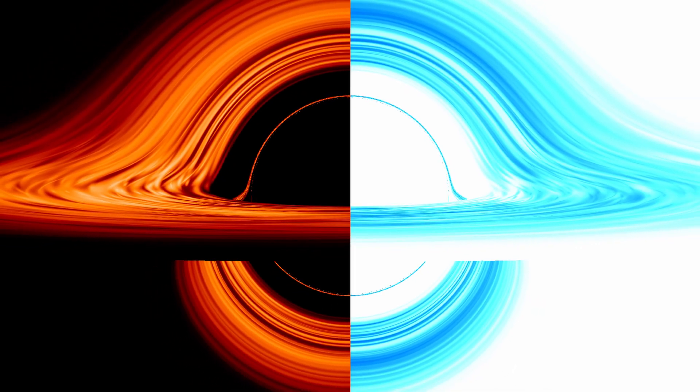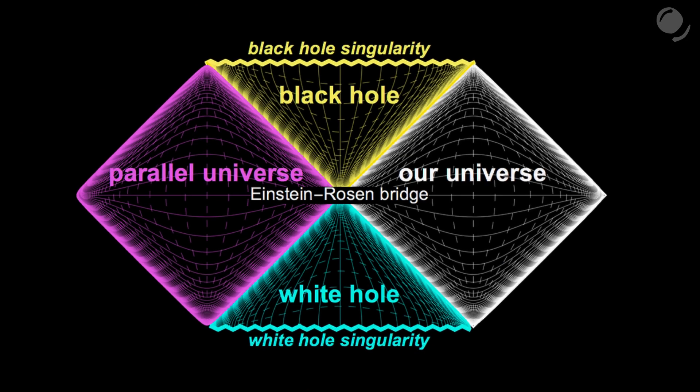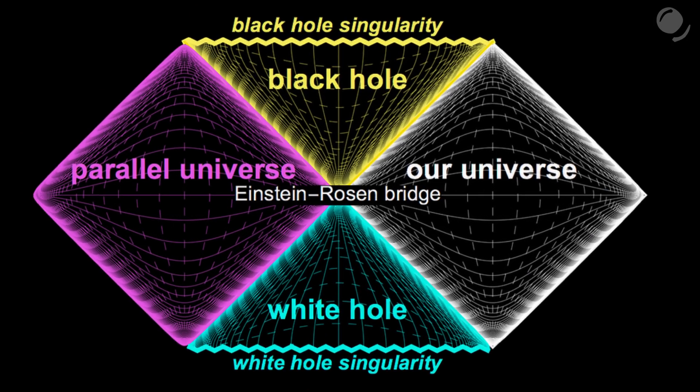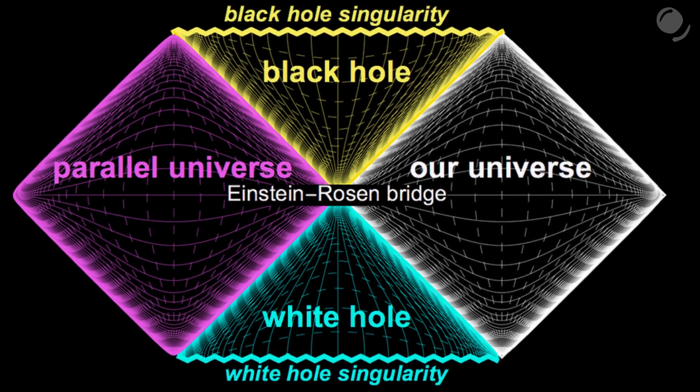White holes, time reversal of black holes. Even though, just like black holes, they occur in some solutions of Einstein's equations, in reality white holes probably cannot exist. Black holes made of light. What? As weird as it sounds, the idea might not be that crazy.